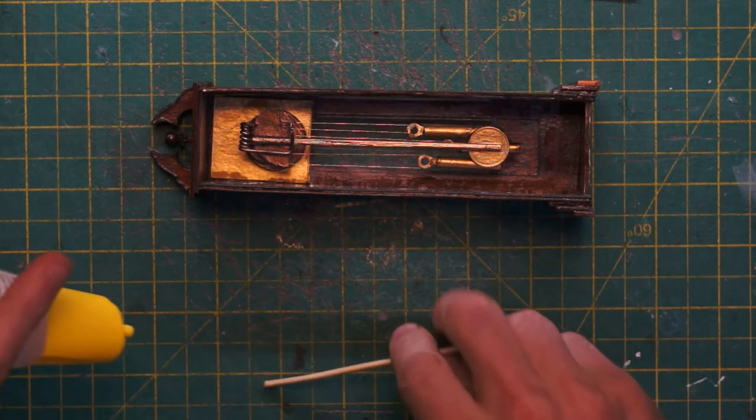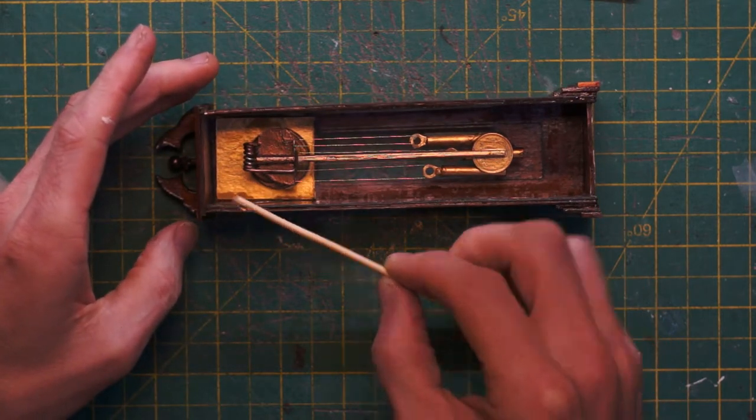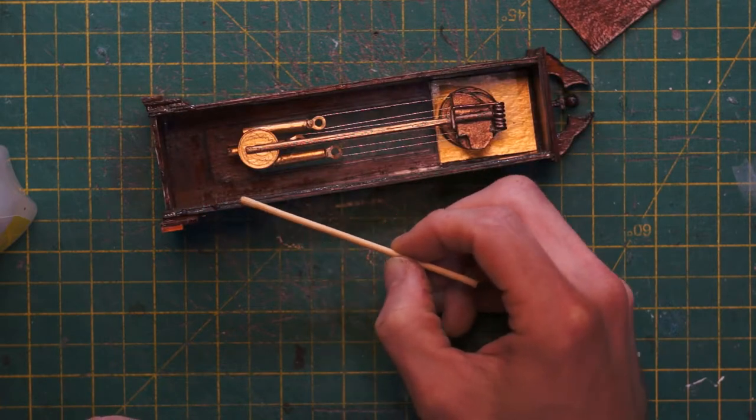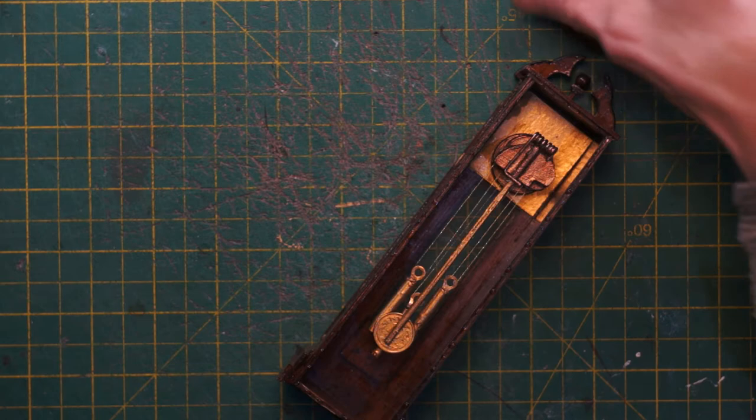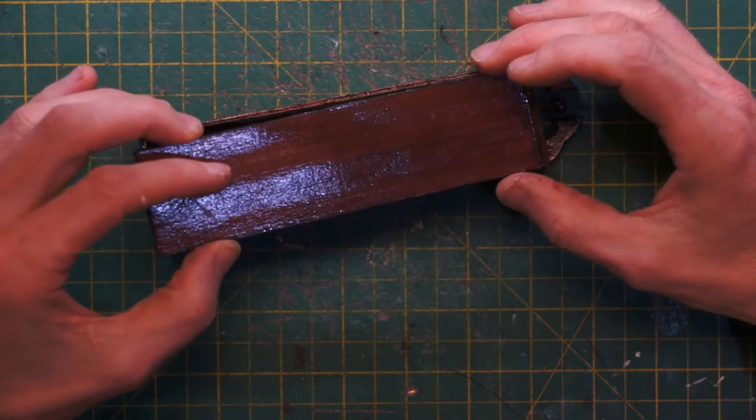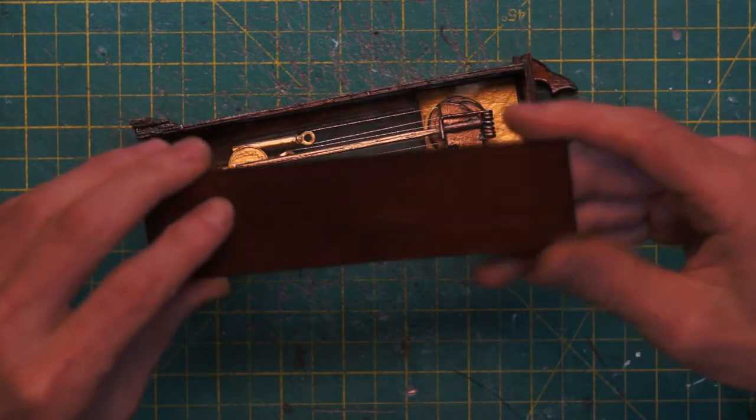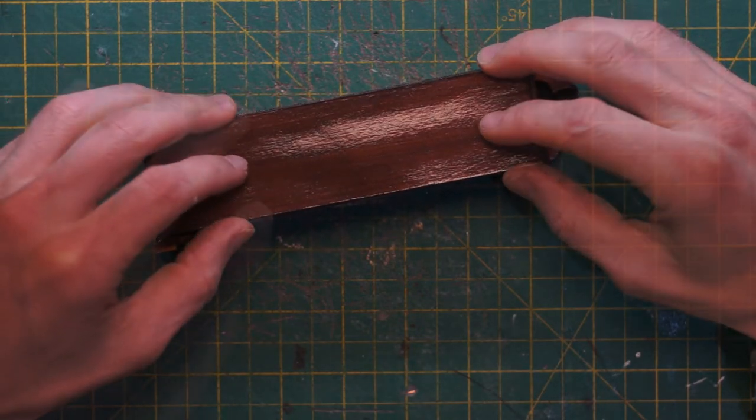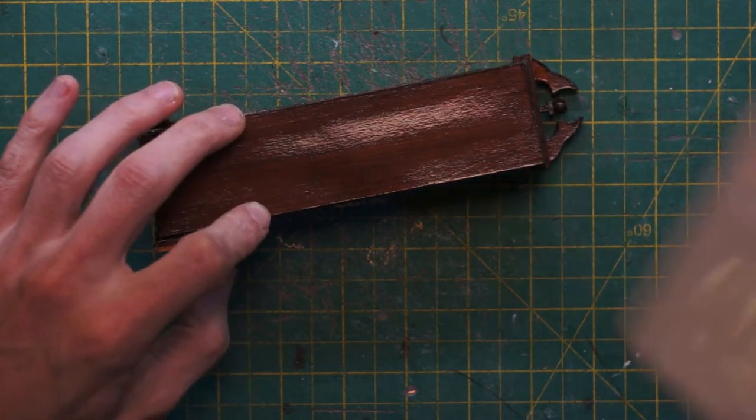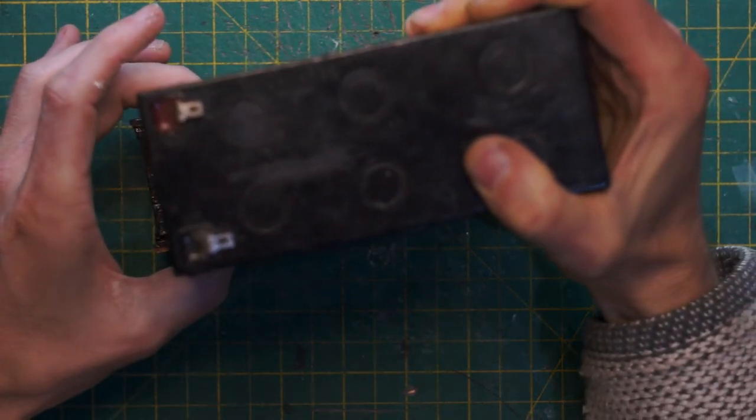So it's time to encase everything inside by putting the back panel on so let's put a thin dab of glue all the way around the back edge. And to make sure that stays completely flat I'm gonna use my trusty weight and leave that overnight ready for the big reveal in the morning.